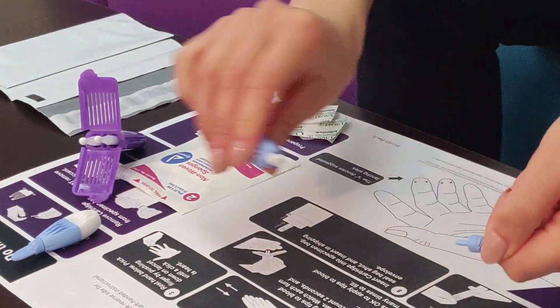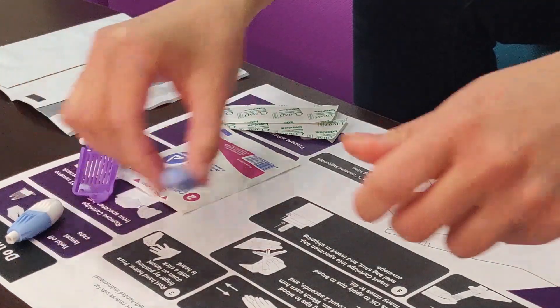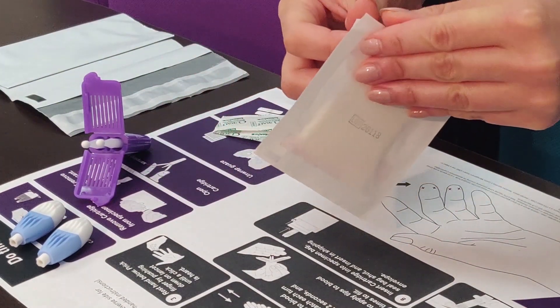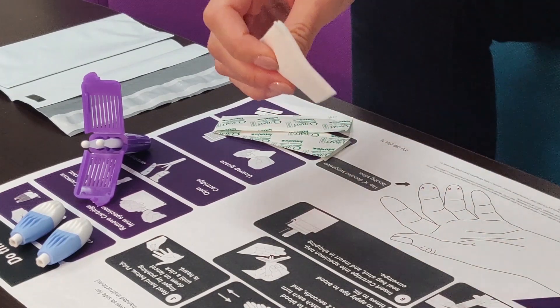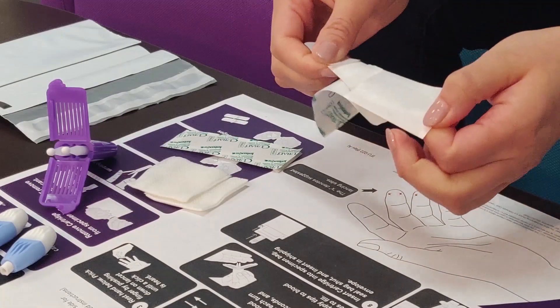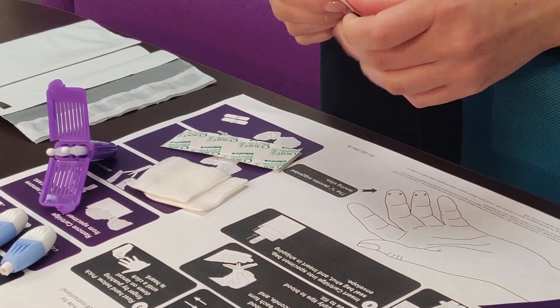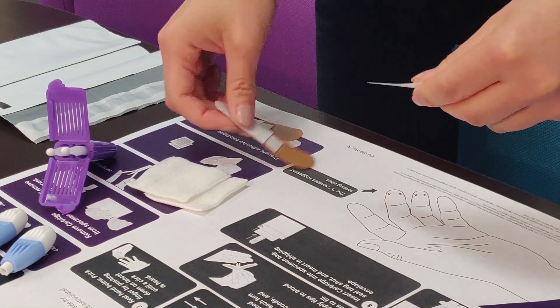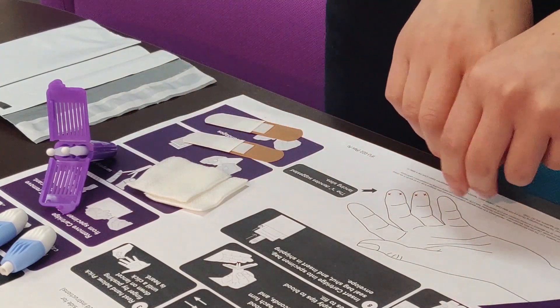Then twist the caps off the lancets. Now remove the gauze from its packaging. Lastly, unpeel the backing from one side of each bandage. Keep all items within reach. You're now ready to collect a blood sample.